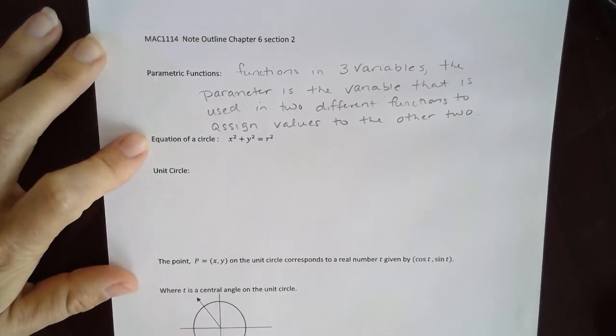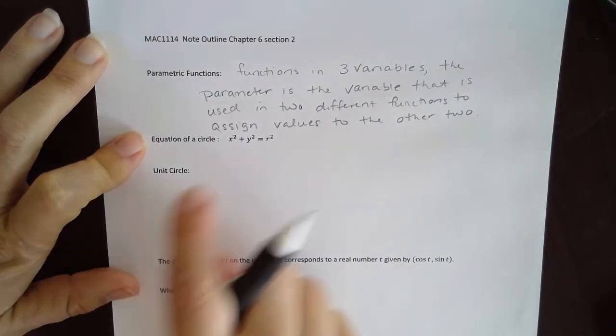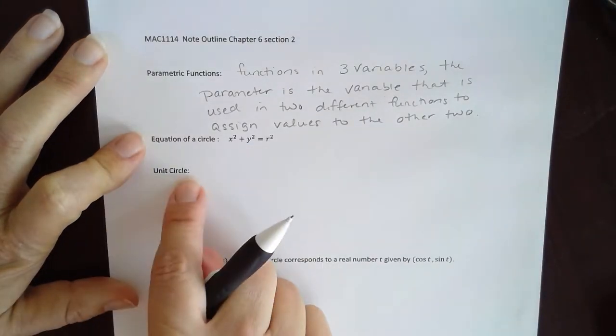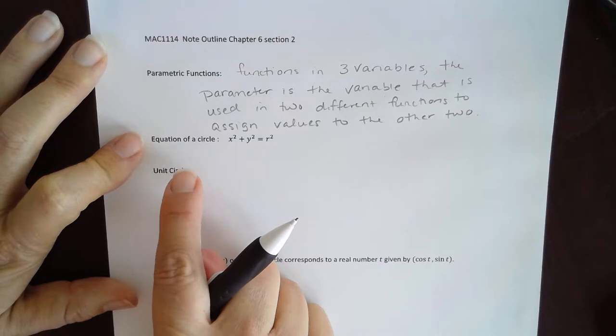Just remember the equation of a circle where the center is the origin is x squared plus y squared is equal to r squared. And if we're talking about a unit circle in particular, that's going to be a circle with a radius of one center at the origin.